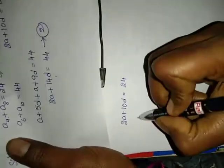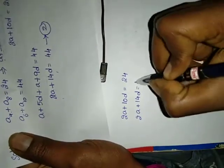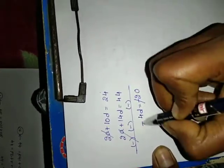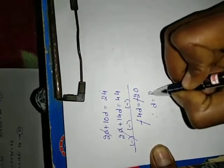We have got two equations. Now let us solve them: 2A plus 10D equals 24, and 2A plus 14D equals 44. Subtracting the first from the second, 2A cancels, and 14D minus 10D gives 4D equals 44 minus 24 equals 20. Therefore D equals 20 divided by 4, so D equals 5.